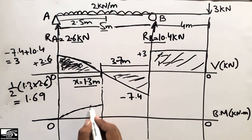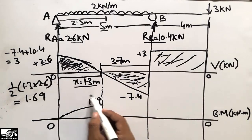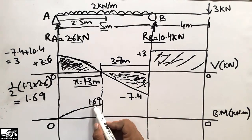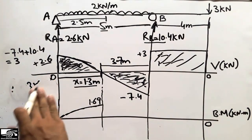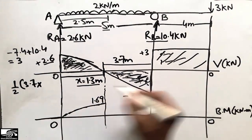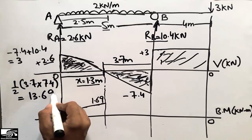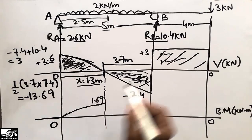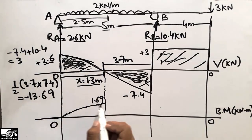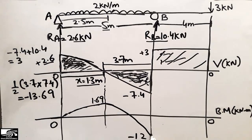The second shape is also a triangle, below the reference line — so its area is negative and we subtract it from 1.69. The area is half times base times height: half into 3.7 into 7.4 equals 13.69 kilonewton-meters. Subtracting: 1.69 minus 13.69 gives minus 12. So the bending moment drops to minus 12 kilonewton-meters.